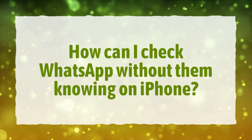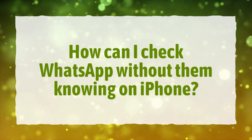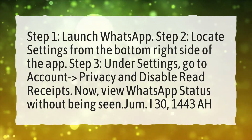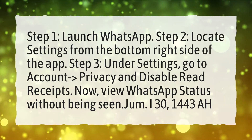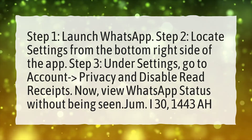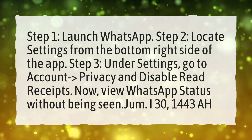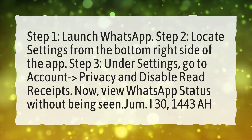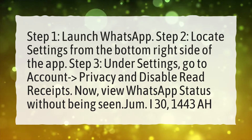How can I check WhatsApp without them knowing on iPhone? Step 1: Launch WhatsApp. Step 2: Locate Settings from the bottom right side of the app. Step 3: Under Settings, go to Account then Privacy and disable Read Receipts.